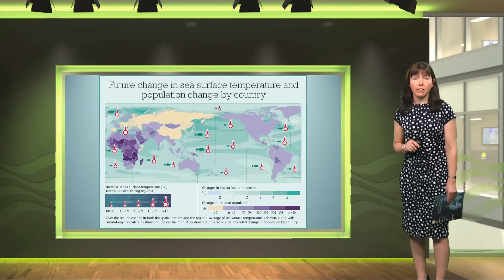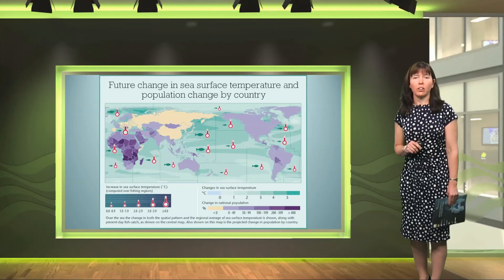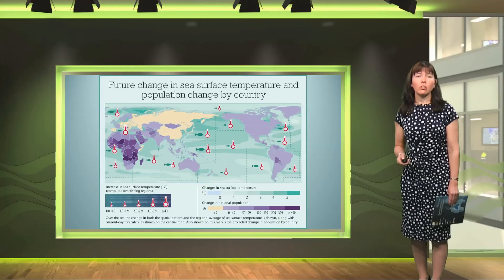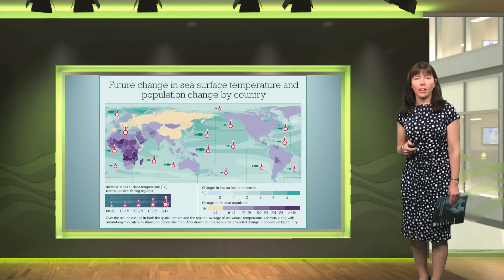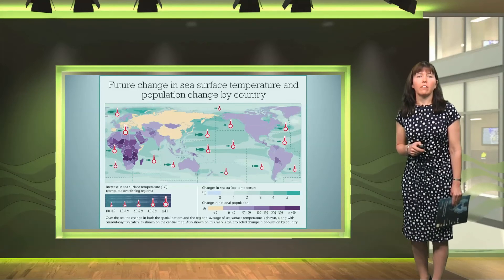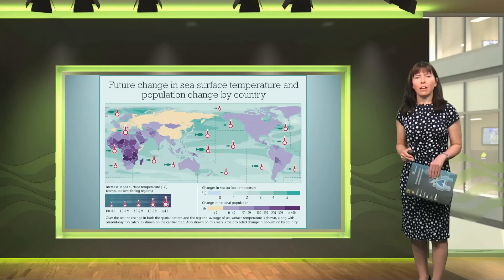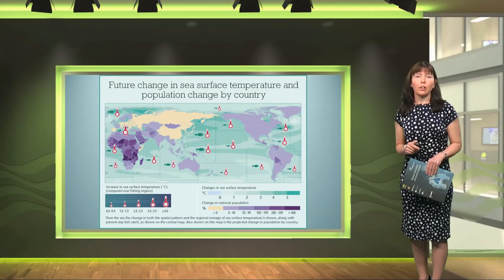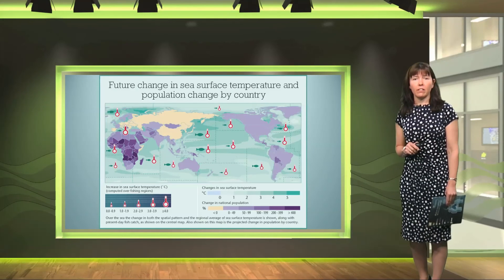Finally, in the bottom right hand corner there's a map showing the future change in sea surface temperature and population change by country. This shows that the temperature of the surface of the oceans is also projected to increase. Combining this with ocean acidification threatens marine ecosystems, and consequently there's a concern for fish stocks. All of these changes take place at the same time as global population increases, and the demands on resources will rise as a result.